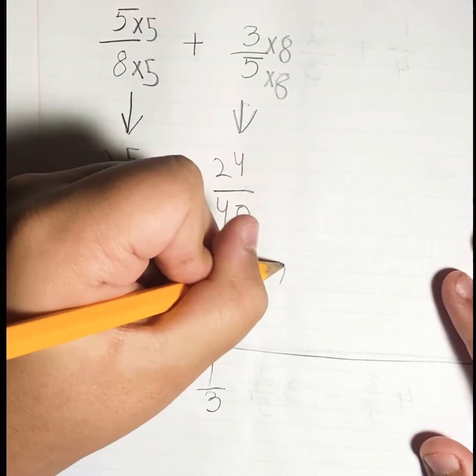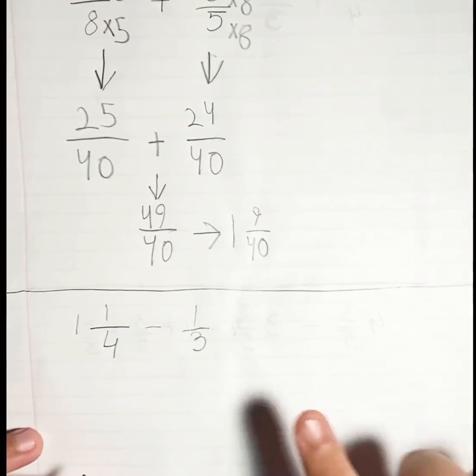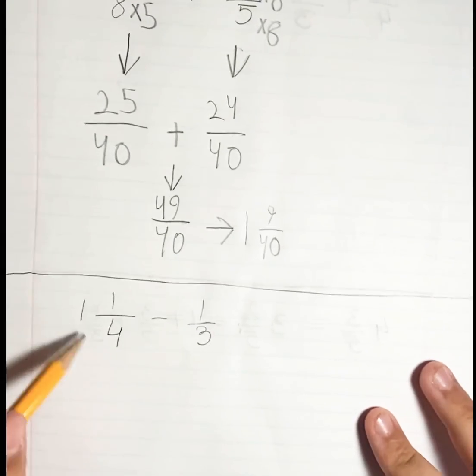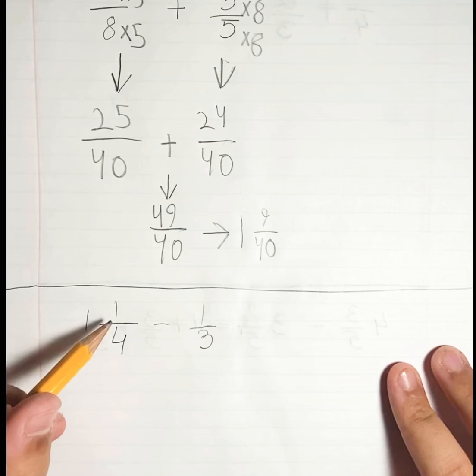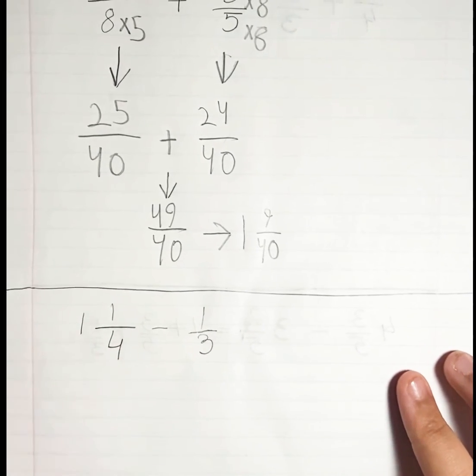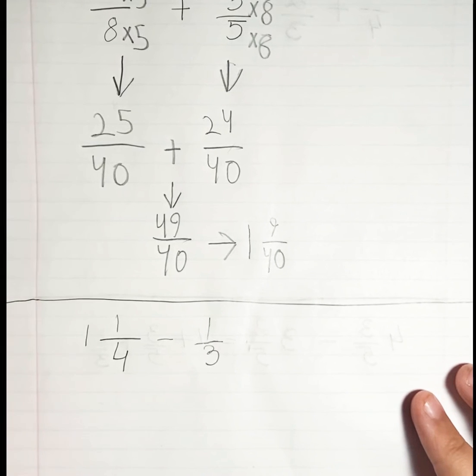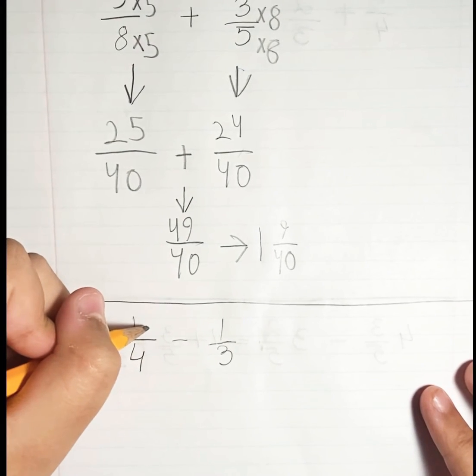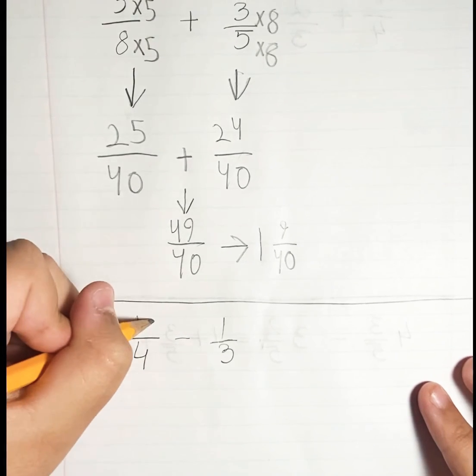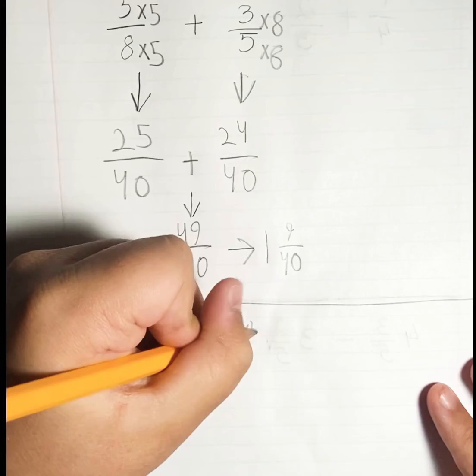Now to the next one. This one is a mixed number: 1 1/4 subtract 1 1/3. So again, the units are not the same. The closest number that I can think of is 12 right now. So I'm going to multiply to get them to 12, so times 3 and times 3, and over here times 4 and times 4.